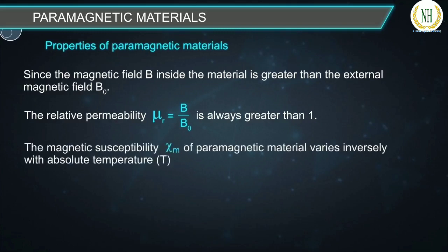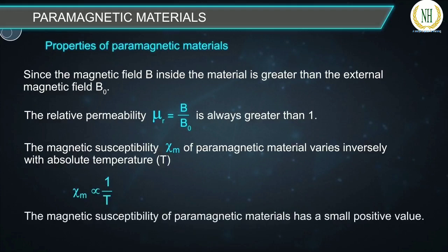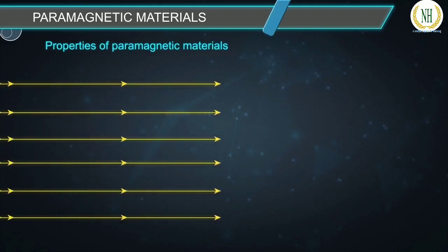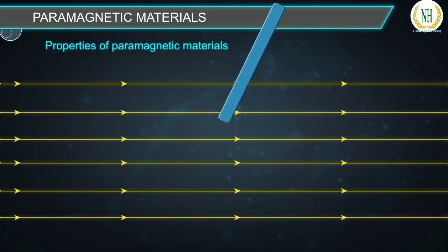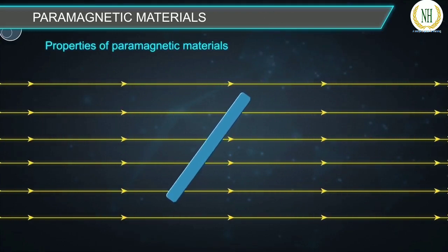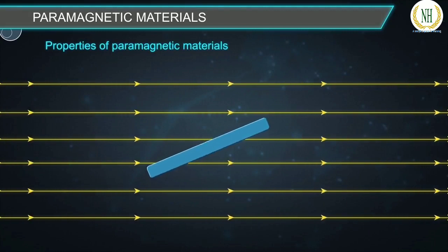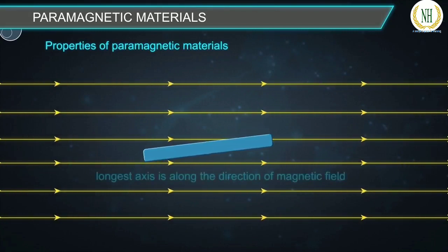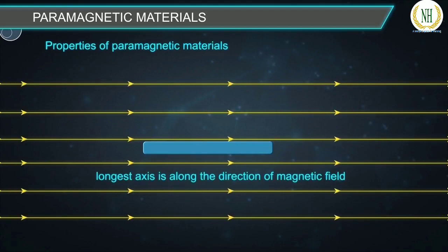The magnetic susceptibility χₘ of a paramagnetic material varies inversely with absolute temperature (χₘ ∝ 1/T) and has a small positive value. (4) When a paramagnetic rod is suspended freely in a strong uniform magnetic field, it experiences a force and comes to rest with its longest axis aligned along the direction of the magnetic field.